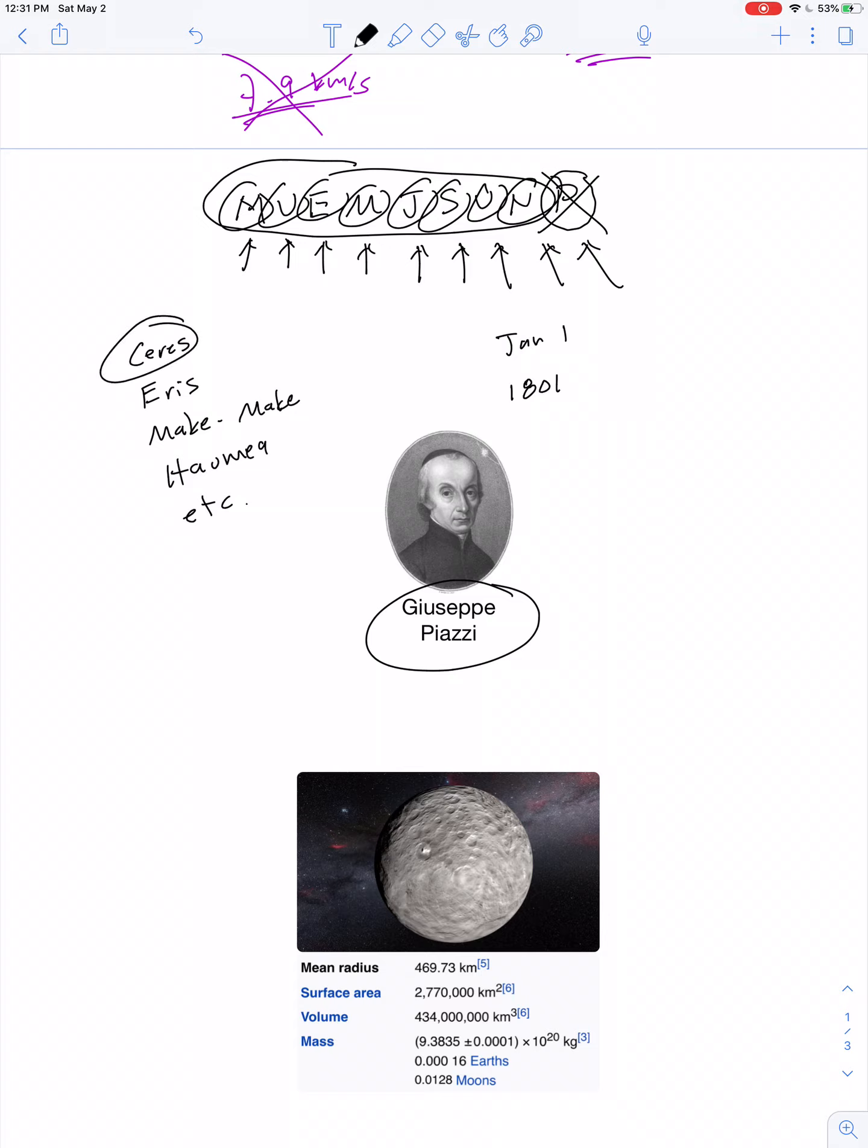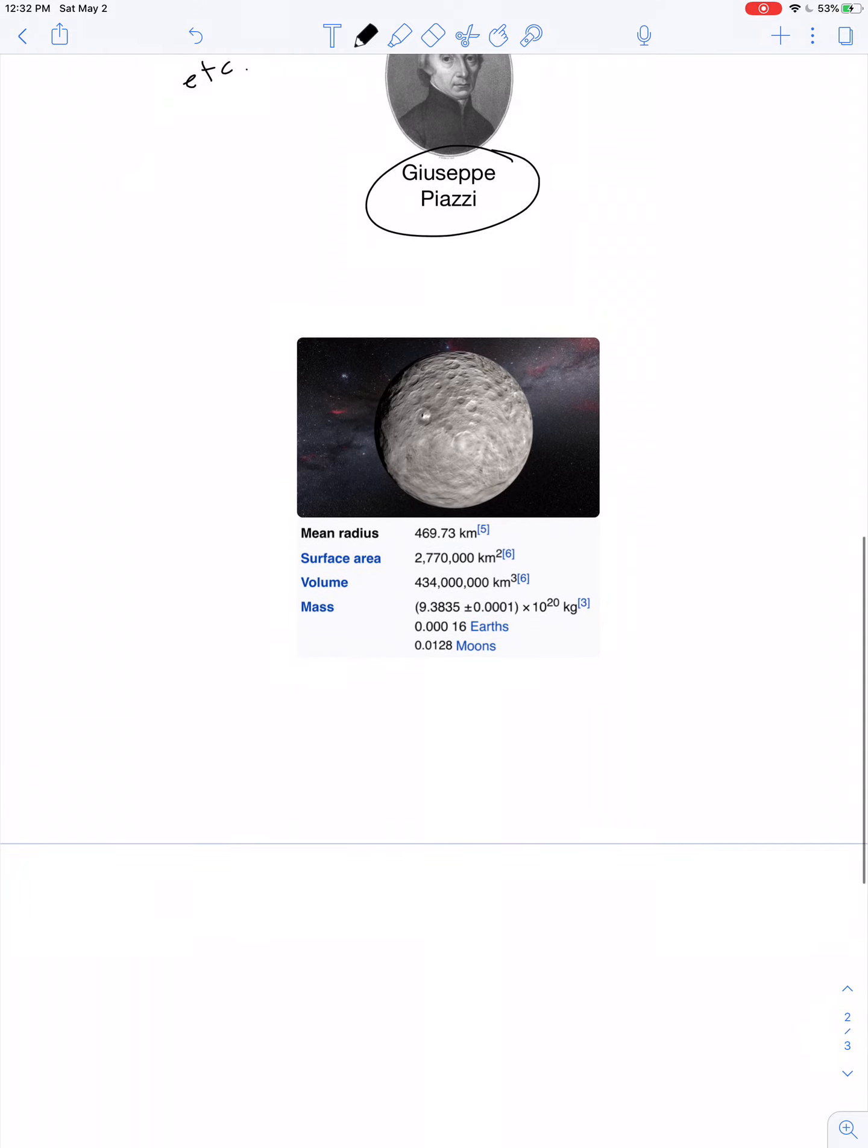Ceres is located in orbit somewhere in between the orbit of Mars and Jupiter. It's rather small. Here are some of the physical properties of Ceres. It has a radius of about 470 kilometers, so that's 470,000 meters, or 4.7 times 10 to the 5th meters. Its mass is a small fraction of the Earth, even a small fraction of the mass of the Moon. It's 9.38 times 10 to the 20th kilograms.